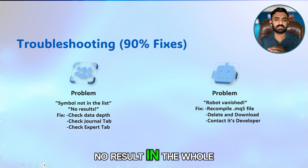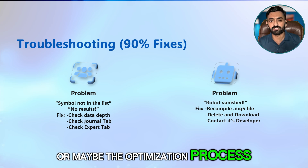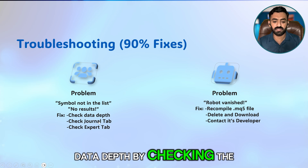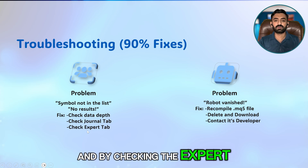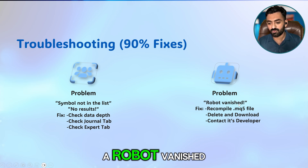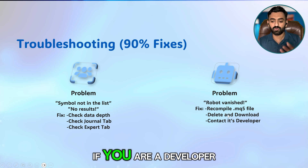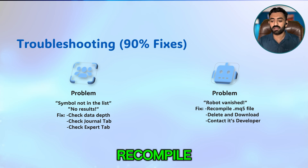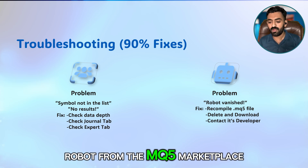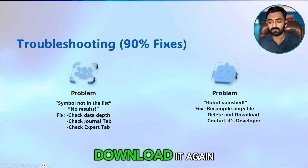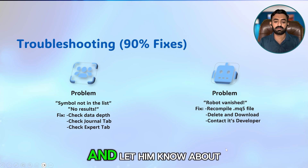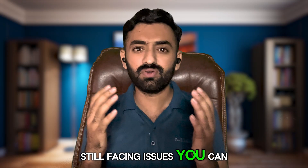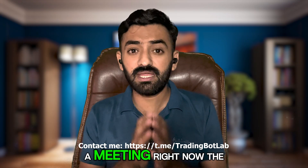The next problem is no results in backtesting or optimization. Check the data depth via the Journal tab and the Expert tab. Other problems include a robot that has vanished — you may need to recompile the EA if you're a developer, or contact the developer for an updated version. If using a robot from the MQL5 marketplace, delete and re-download it, or contact the developer about the error you're facing.